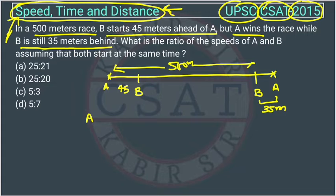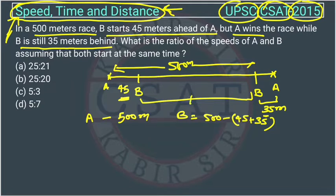So A is covering how much distance? A is covering 500 meters. And B is covering how much? B is covering 45 less here and 35 less here, so B is covering 500 minus 45 and minus 35. This will be 500 minus 80, so this will be 420 meters.